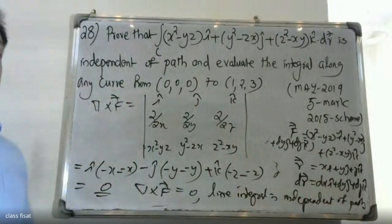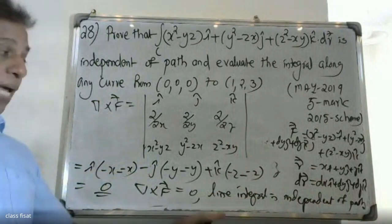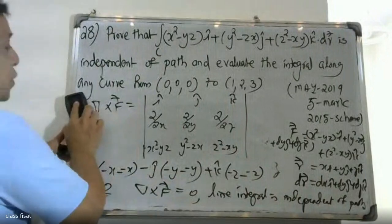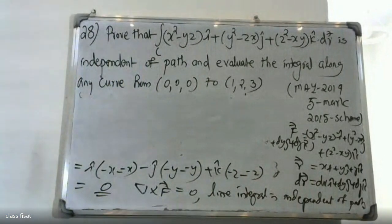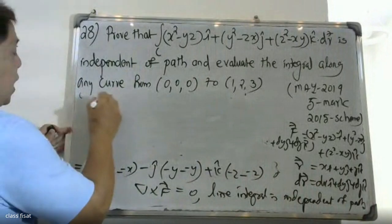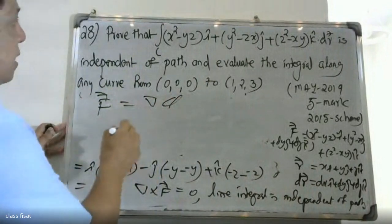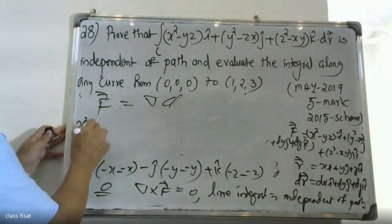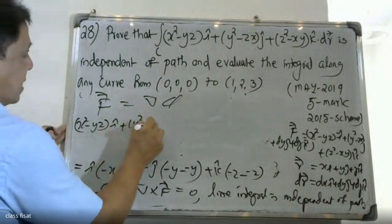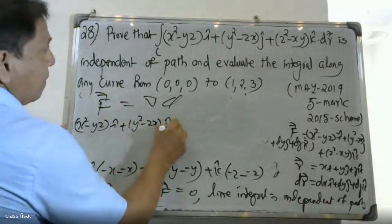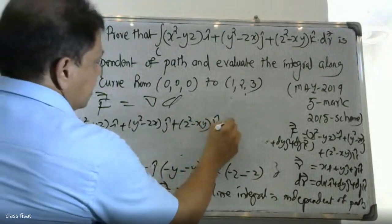Now we evaluate the integral. The vector field F = (x² - yz)i + (y² - zx)j + (z² - xy)k. Since F is conservative, F equals the gradient of a scalar potential φ.